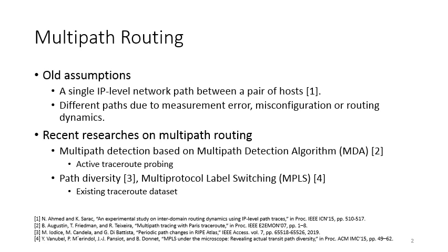The background of our paper is multipath routing. There have been some older assumptions in this area. For example, there is only one single IP-level path between a pair of hosts, and if different paths were observed, they were very likely to be caused by measurement errors, misconfigurations, or routing dynamics. However, in recent years, there have been a number of research works on multipath routing, carried out to detect multipath based on MDA with active traceroute probing, or on path diversity, or on MPLS with existing traceroute datasets. All of these researches have proved that multipath routing could be a legitimate means to achieve load balancing for ISPs.